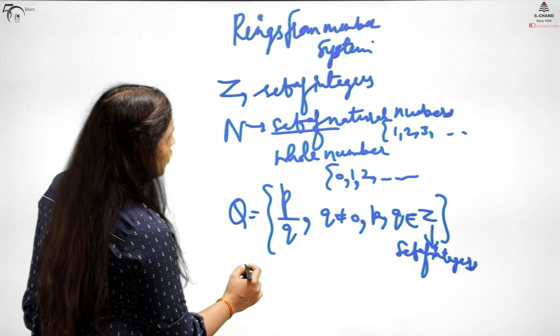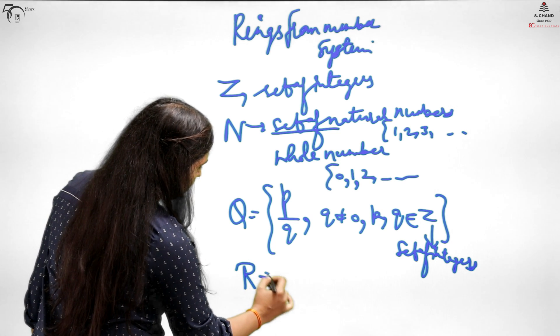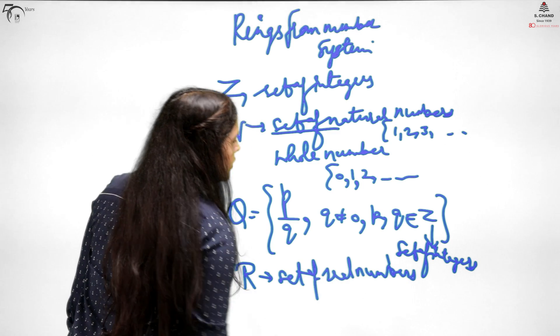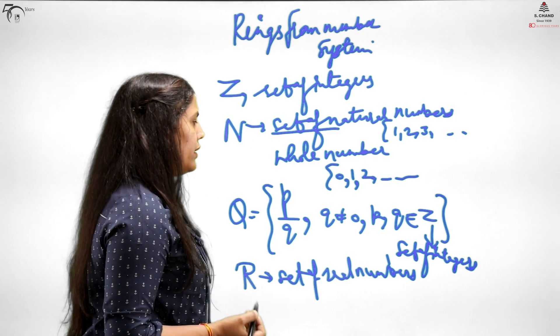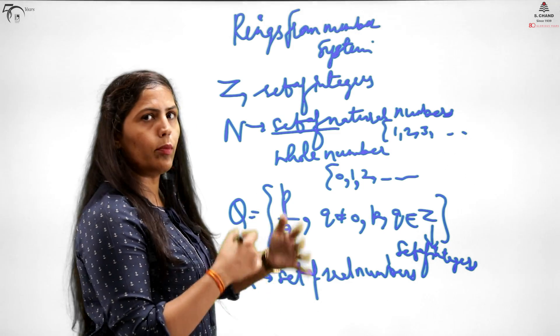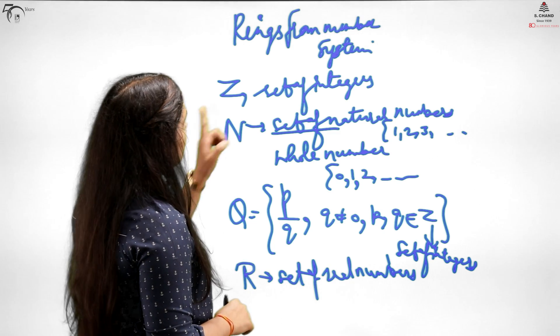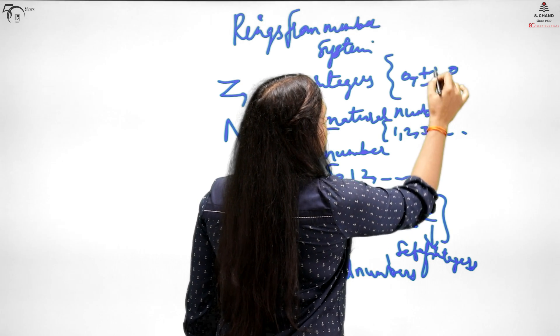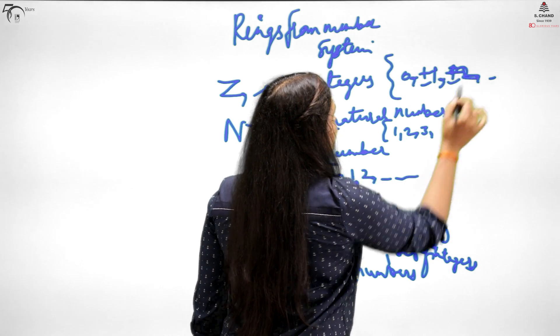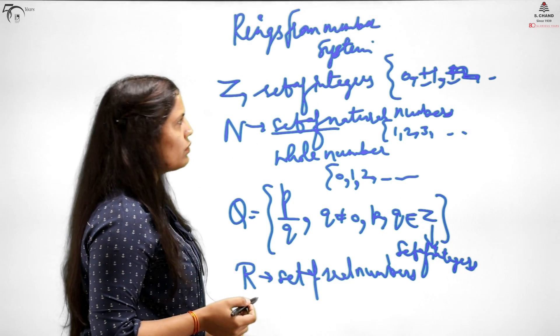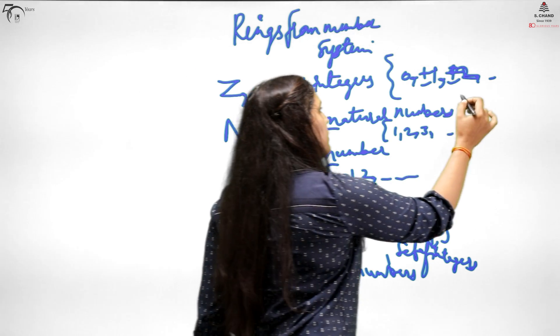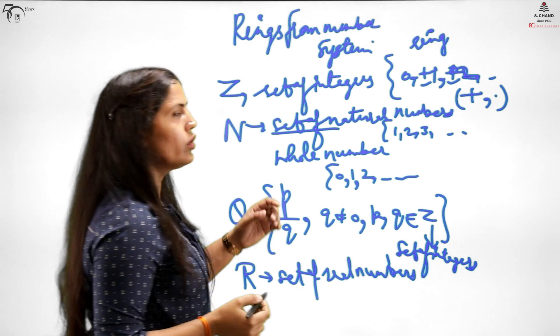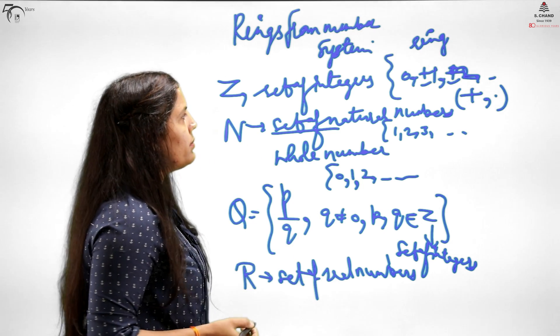Then Z, N, Q and real numbers. If you want to go deep, you can refer to the previous lectures on set theory where we discussed each set in detail. Now if we talk about the set of integers, this is the set. We showed in the previous lecture that this number system, the set of integers, forms a ring with respect to plus and dot. It is a ring and also commutative.